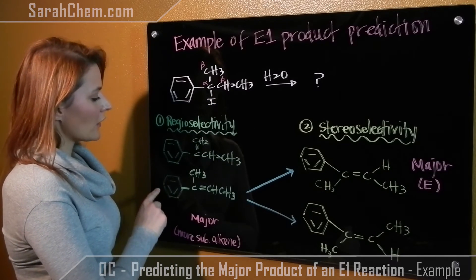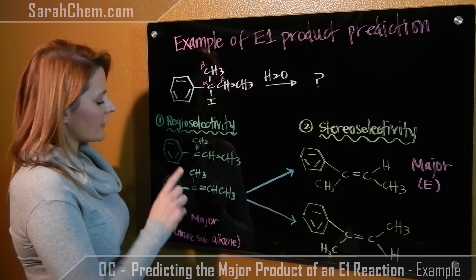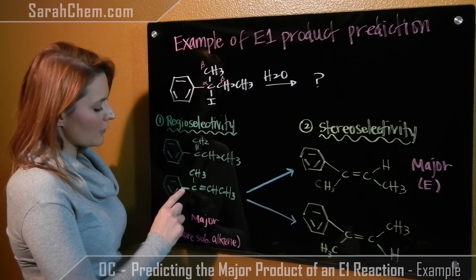So now we have to take a look and see which of these two is more stable. They're both conjugated. It's both double, single, double, double, single, double.